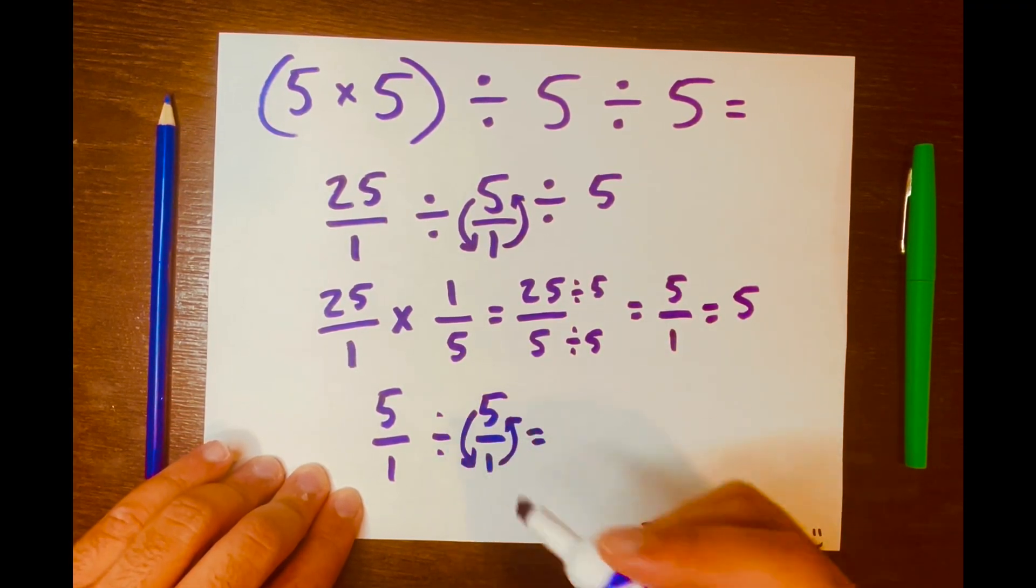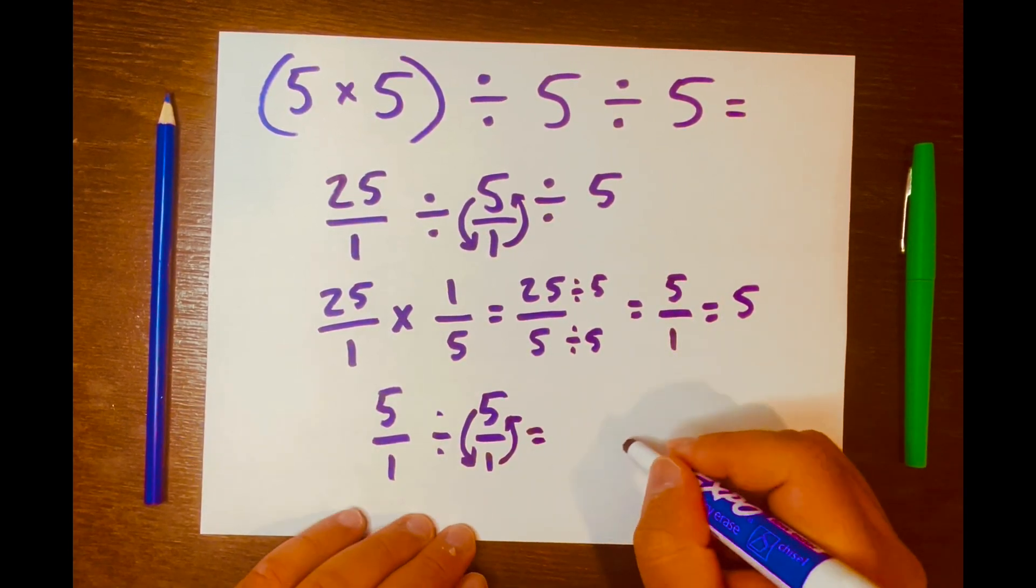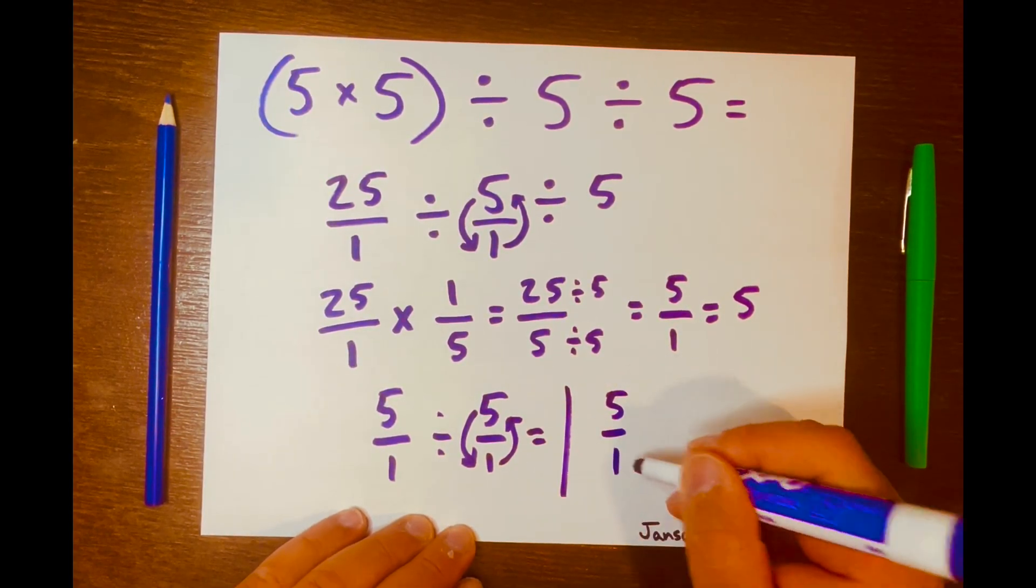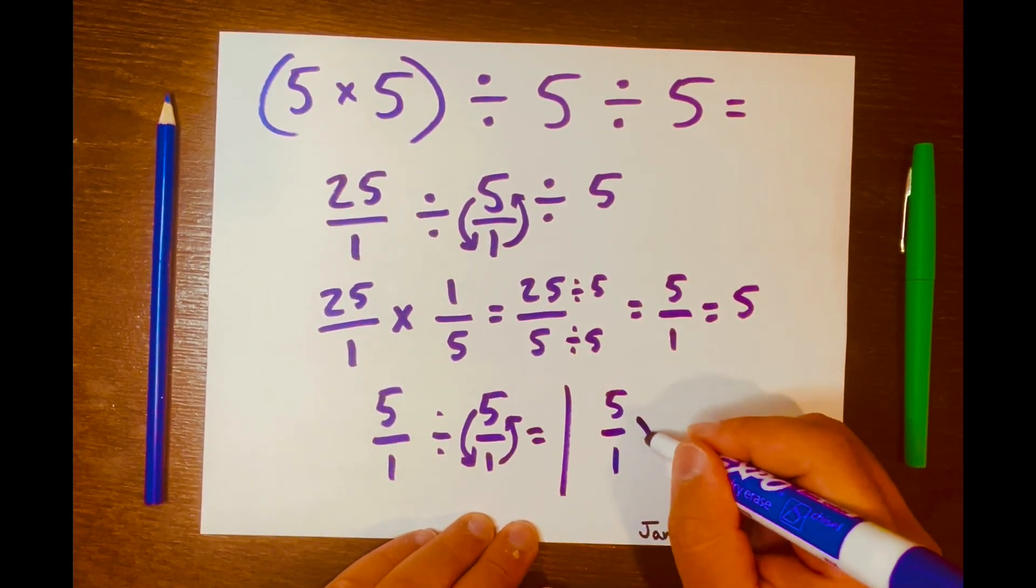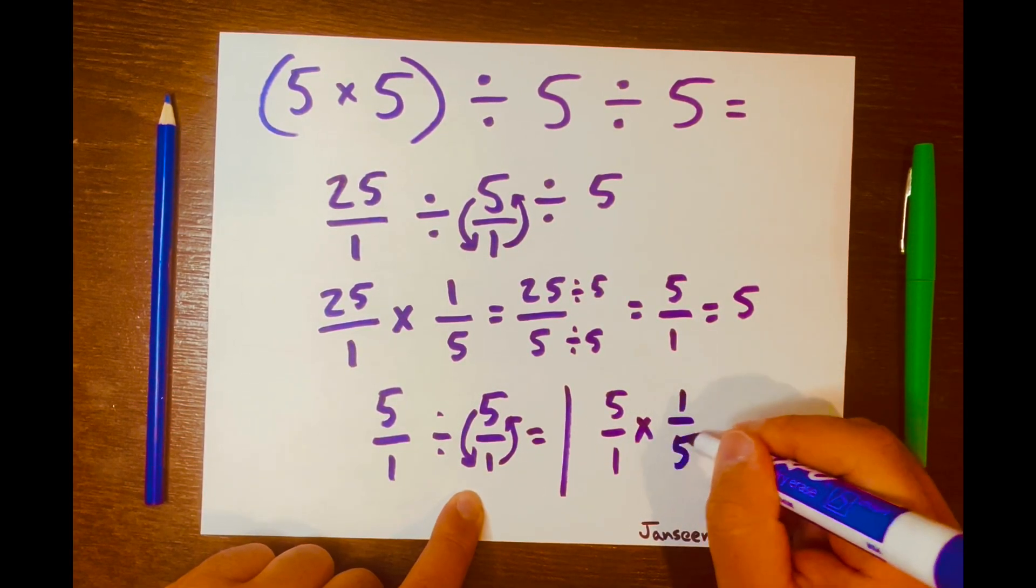So it'll be written like this. I did run out of space here so I'll just write it here: 5 over 1, and change the division sign to multiplication, and then 1 over 5.